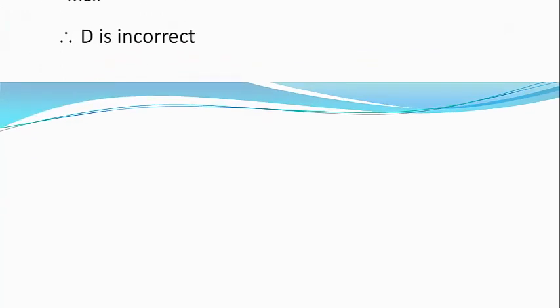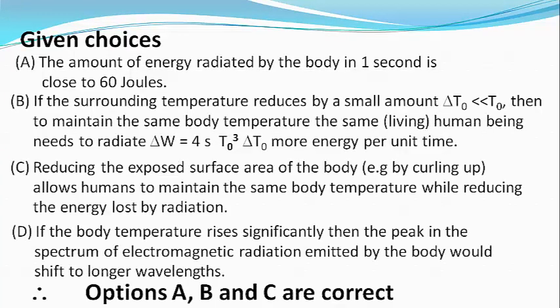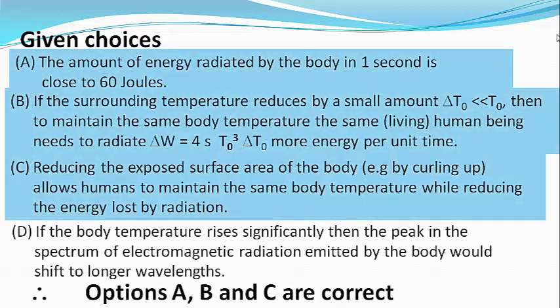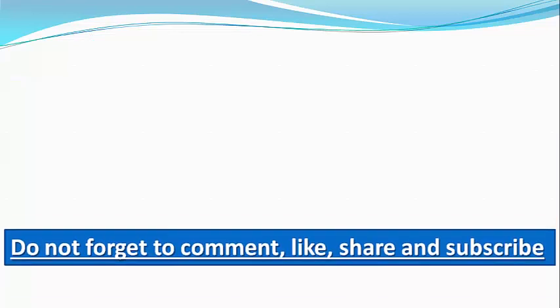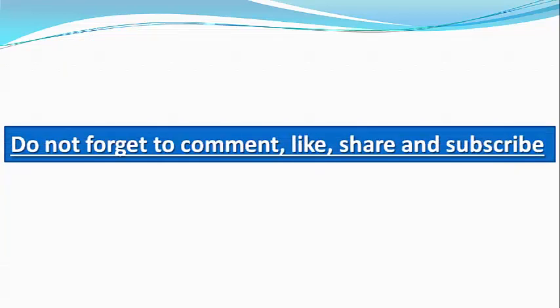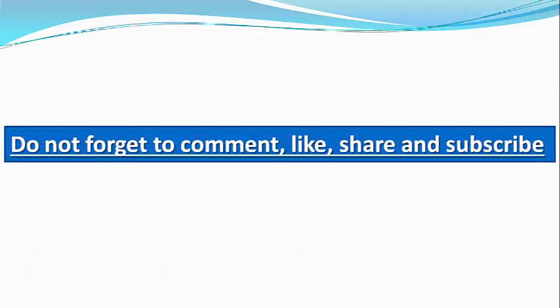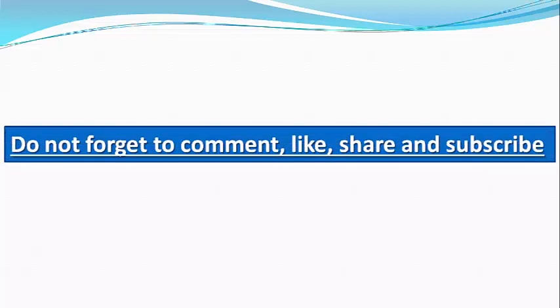To summarize, options B and C are correct whereas options A and D are not correct. Please note that from the question it is not clear whether the examiner is asking for the absolute heat radiated by the body or the net heat radiated. In the present solution we assumed he expects the net heat radiated. Hence this question is a vague question. I hope you could understand the question.